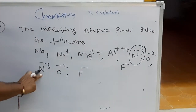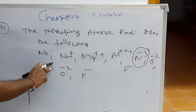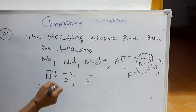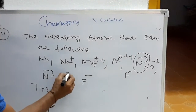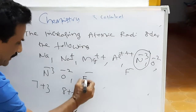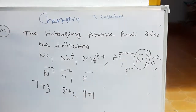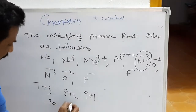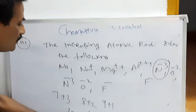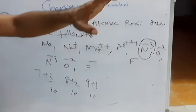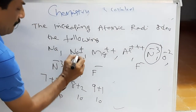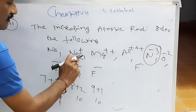The atomic number of nitrogen is 7; with a 3 minus charge we add 3 electrons, giving 10 electrons. Oxygen has atomic number 8; with 2 minus charge, 8 plus 2 equals 10 electrons. Fluorine has atomic number 9; with 1 minus charge, 9 plus 1 equals 10 electrons. So all these species — N³⁻, O²⁻, F⁻, Na⁺ — have 10 electrons each. This is what we call an isoelectronic series.